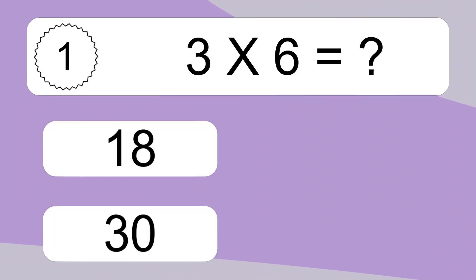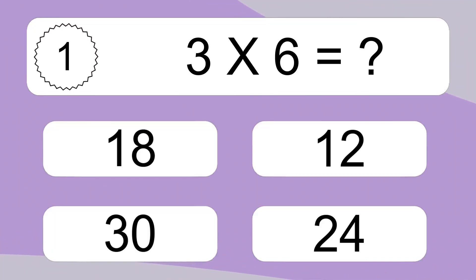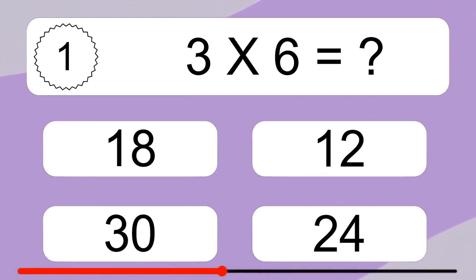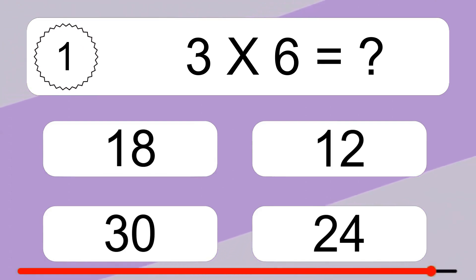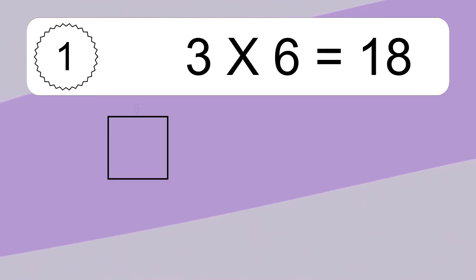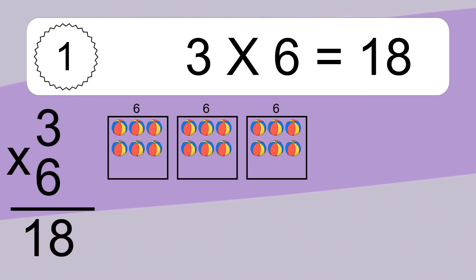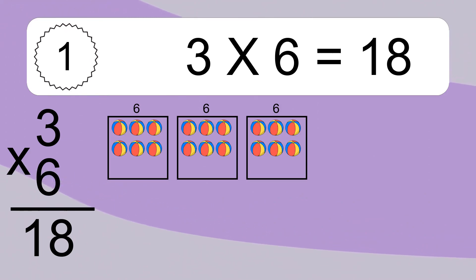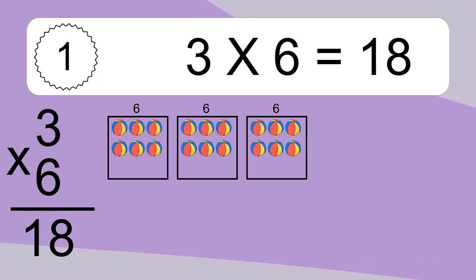3 times 6 equals what? 3 times 6 equals 18. We have 3 boxes, and each box has 6 colorful balls inside. If you count all the balls in all the boxes together, you will have 3 times 6 balls. This equals 18 balls.